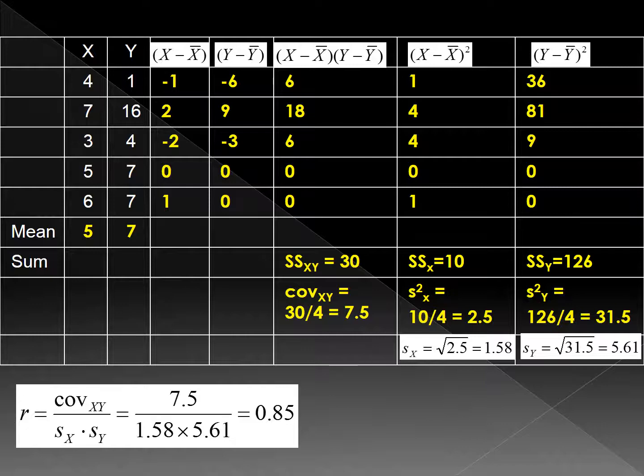Then you take the square root of the variance. You will have 1.58. That is the standard deviation of x: 1.58.